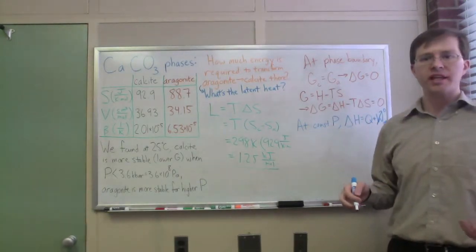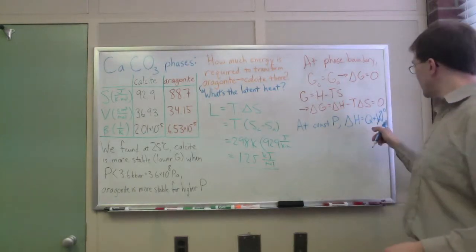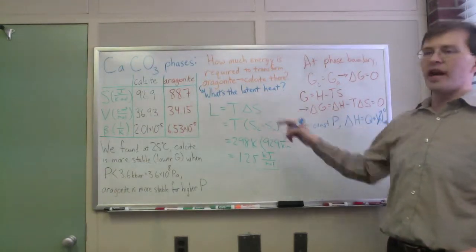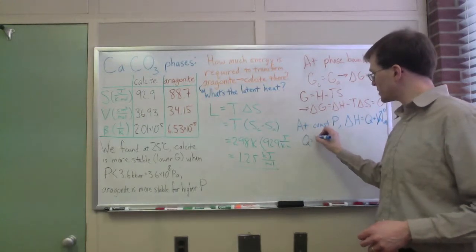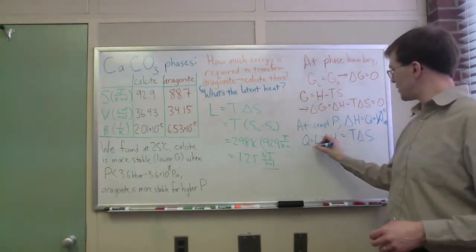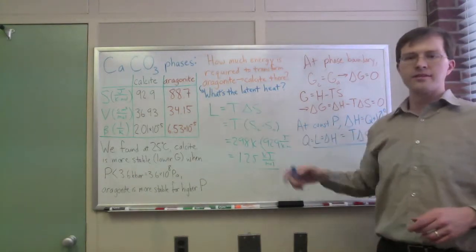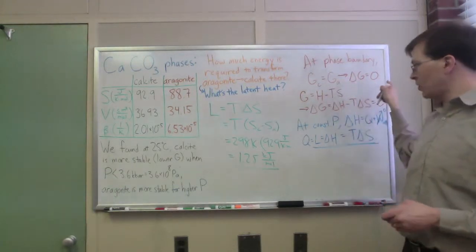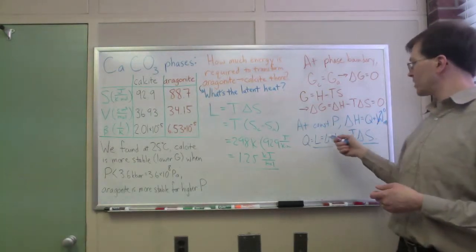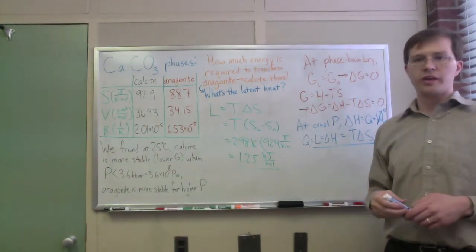That's why we care about this—we want to have the PdV work built into enthalpy and just know how much energy we need to add in addition to what the surrounding rocks are doing. If Q equals delta H, then Q in this special case is latent heat. So Q equals L equals delta H equals T delta S. That's the origin of this handy formula that latent heat is T times delta S. It comes directly from the Gibbs free energies being equal and enthalpy being the right variable when holding pressure constant.